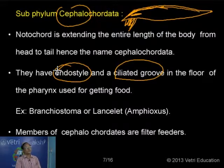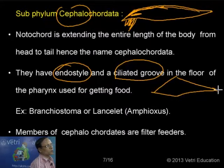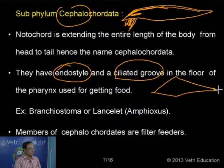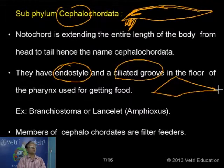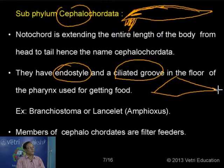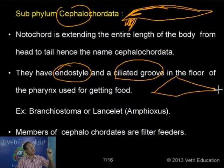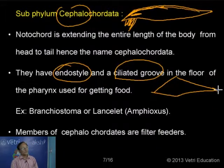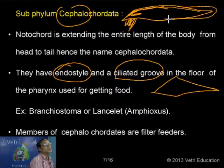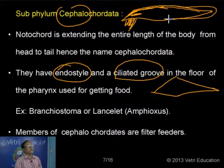The example for Cephalochordata is Branchiostoma, commonly called Amphioxus or Lancelet. The body shape is like a lancelet. These animals are not considered fishes, though they look like fishes, because they lack the two main fish characteristics: presence of scales on the surface of the body, and presence of paired fins such as pectoral and pelvic fins. They have only median fins - dorsal and ventral fins - which are unpaired.